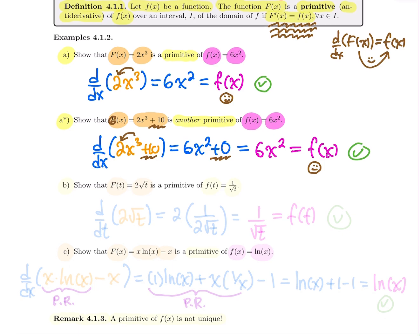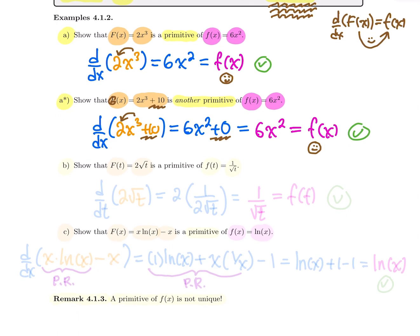Be careful: you cannot say 'find the primitive' or 'the antiderivative,' because there's more than one function. Just by adding a constant, it's not going to change the result of your derivative. A primitive for small f is never unique. If you add a constant and then compute the derivative, that constant gives you a 0, so it won't change the derivative. That new function will again be a primitive for your function — so it's not unique. Say 'find a primitive' or 'all primitives.'